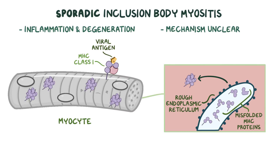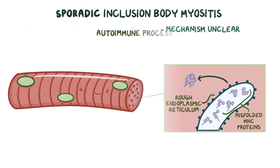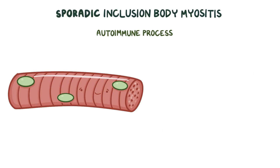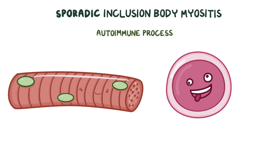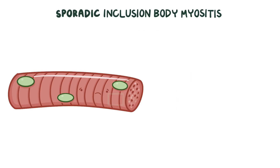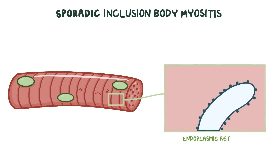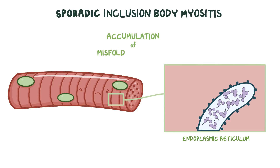Alternatively, sporadic inclusion body myositis may be triggered by an autoimmune process, where T lymphocytes go rogue and inappropriately start to attack normal myocytes. In this scenario, sporadic inclusion body myositis is primarily a degenerative disorder that leads to cellular dysfunction. This dysfunction can lead to the endoplasmic reticulum of these myocytes improperly creating and folding proteins, resulting in the accumulation of many misfolded proteins.